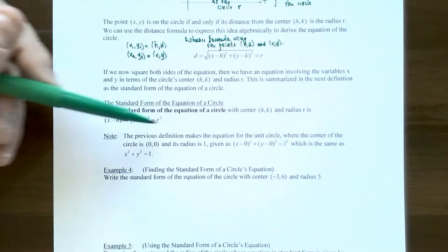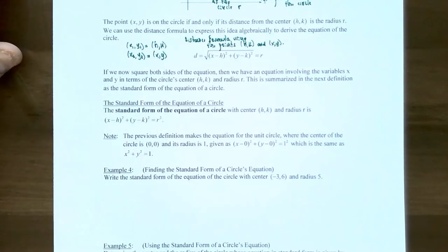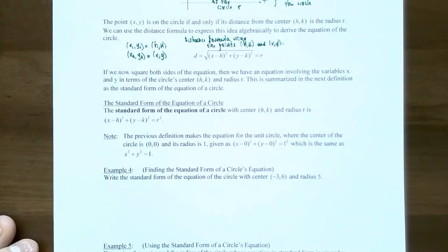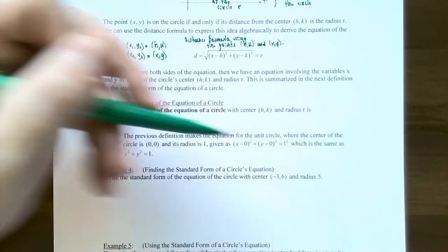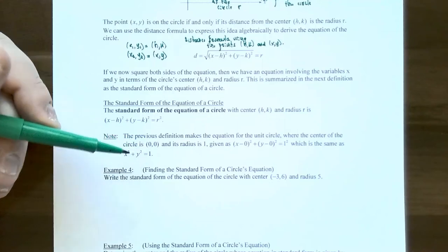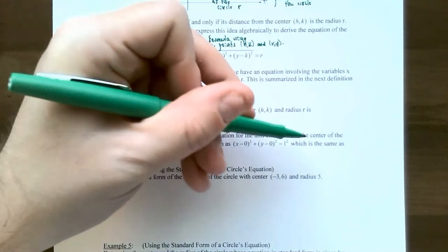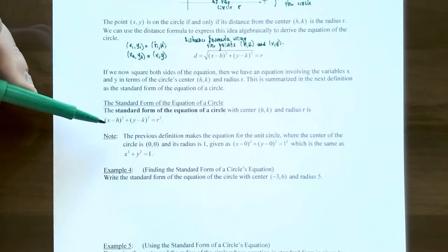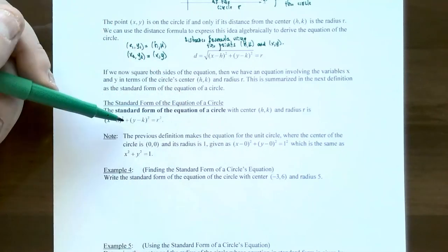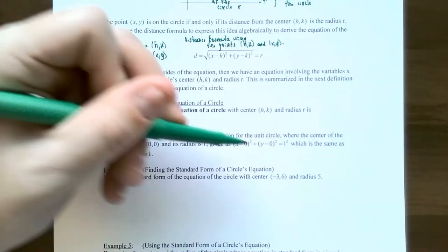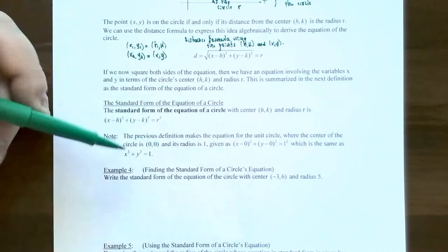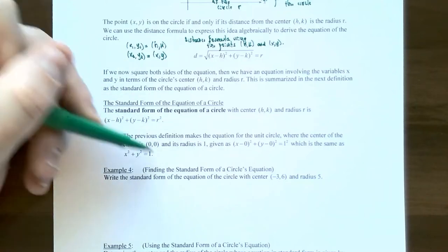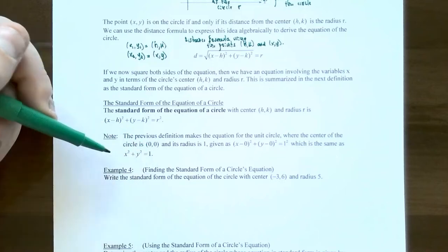If you have an equation of this form, it will always represent a circle with center h, k and radius r. One very special type is the unit circle, where the center is at the origin (0, 0) and the radius is 1. Plugging in gives x² + y² = 1. This is the equation of a circle with radius 1 centered at the origin.